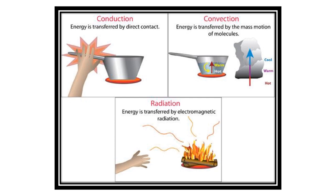To give you an overview about the three methods of heat transfer, let us take a look at our illustration. In conduction, energy is transferred by direct contact. In convection, energy is transferred by the mass motion of molecules. And in radiation, energy is transferred by electromagnetic radiation. We are going to discuss these three methods one by one.